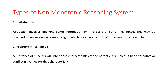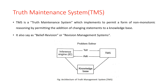The system to deal with such non-monotonic knowledge is called the Truth Maintenance System, or TMS. The main objective of the TMS is the maintenance of the knowledge base. This TMS is a mechanism for keeping track of dependencies and detecting inconsistencies. It is also called the reason maintenance system. The TMS implements a form of non-monotonic reasoning by permitting the addition of changing statements to a knowledge base. It is also called the belief revision or revision management system.